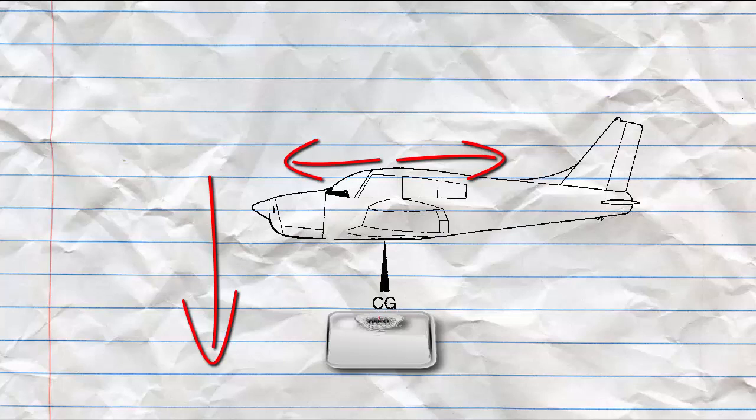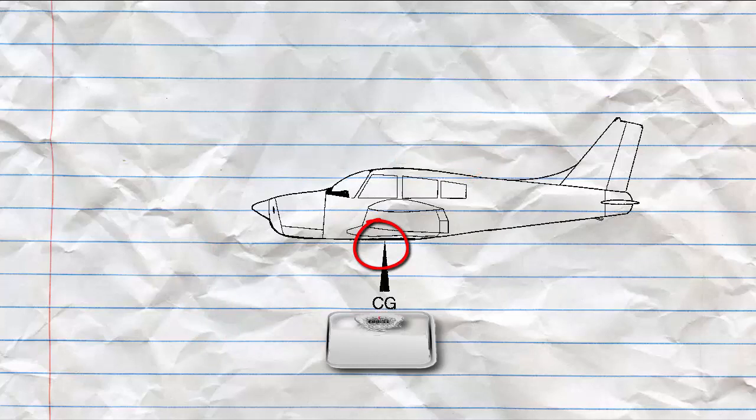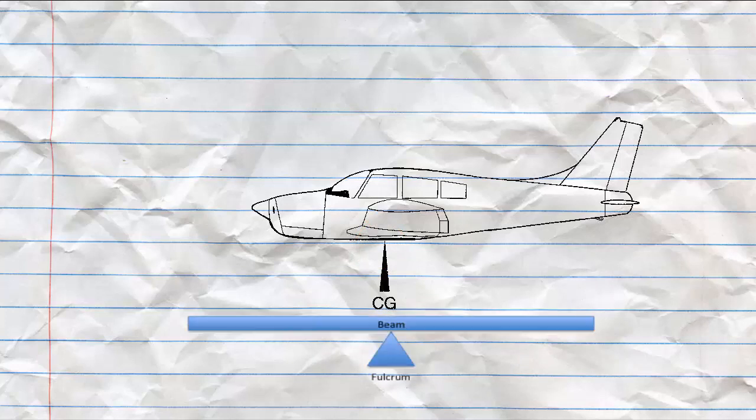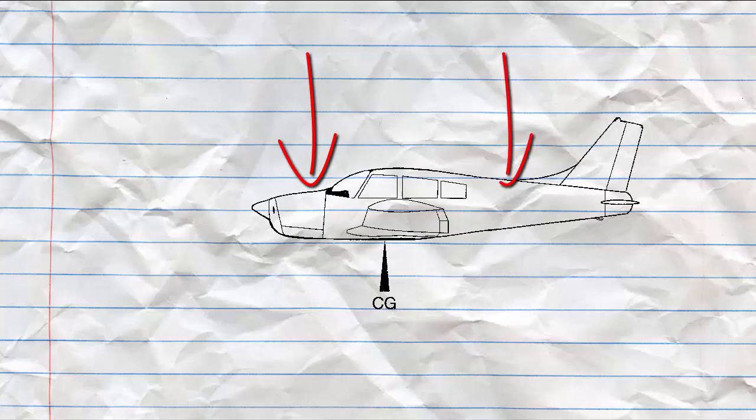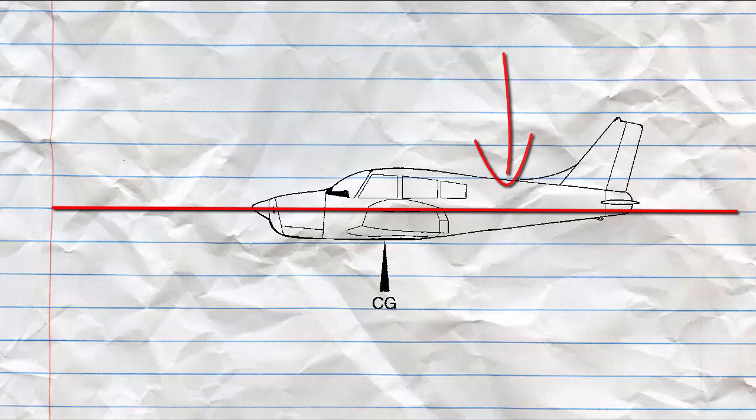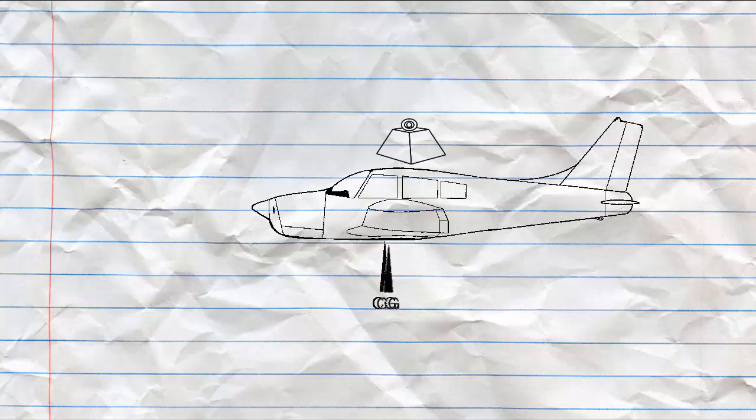Now there are two aspects to weight and balance: weight and balance. Balance refers to the location of the CG of an aircraft, the center of gravity, and it's important to stability and safety in flight. The CG is a point at which the aircraft would balance if it were suspended at that point, kind of like a fulcrum or the center of a teeter-totter on a kid's playground. The primary concern in balancing an aircraft is the fore and aft location of the CG along the longitudinal axis. The CG is not necessarily a fixed point. Its location depends on the distribution of weight in the aircraft. As variable load items are shifted or expended, there is a resultant shift in CG location.